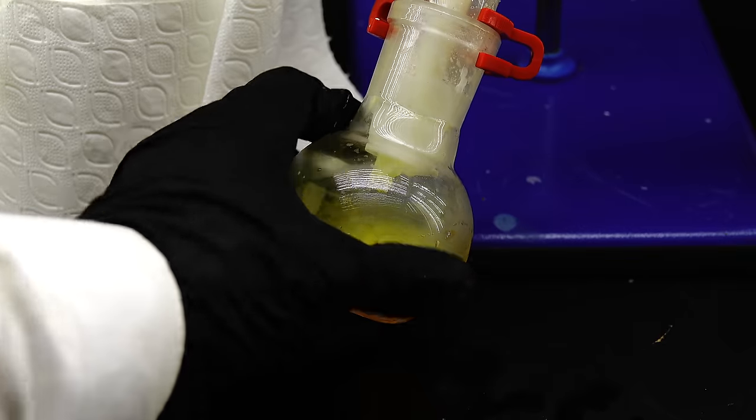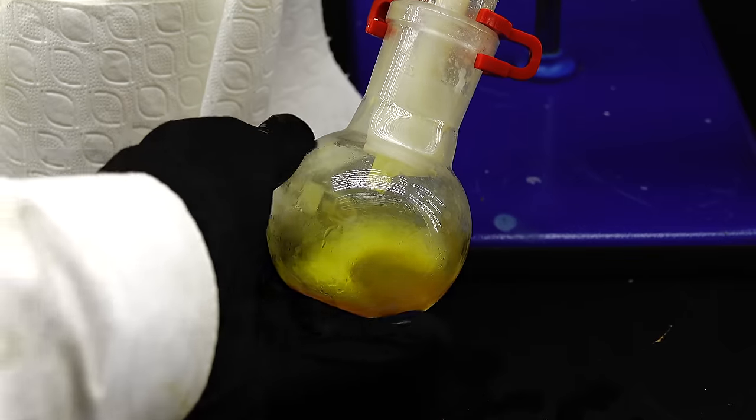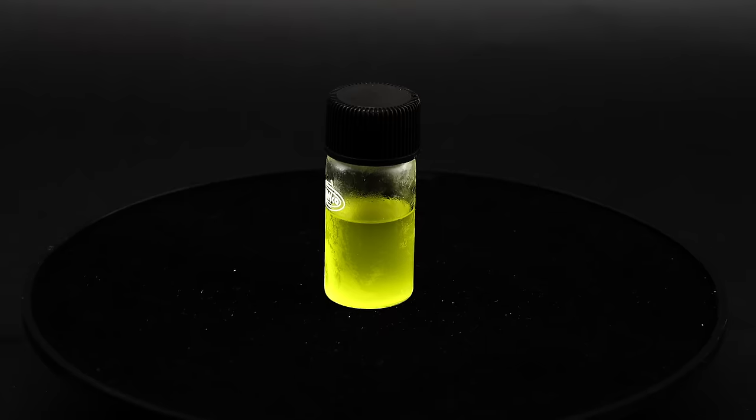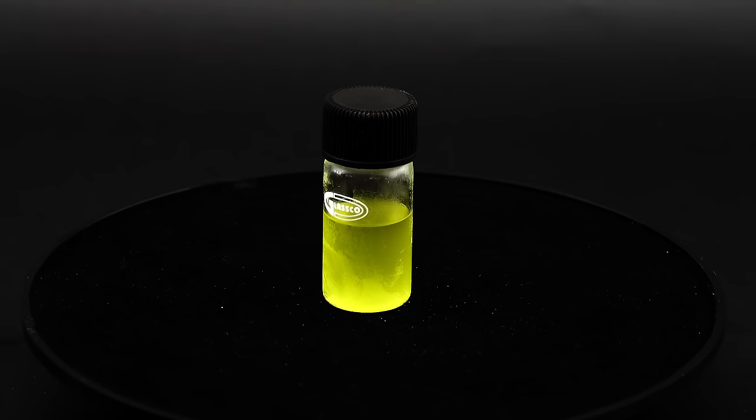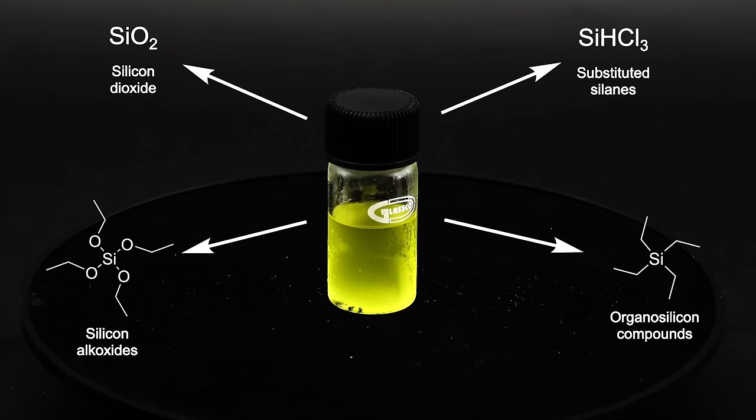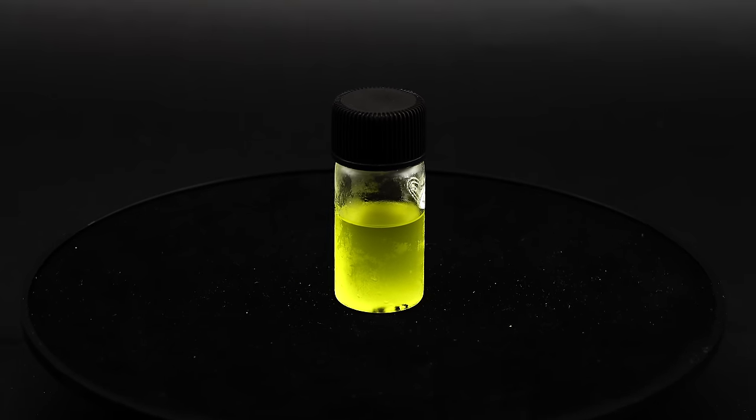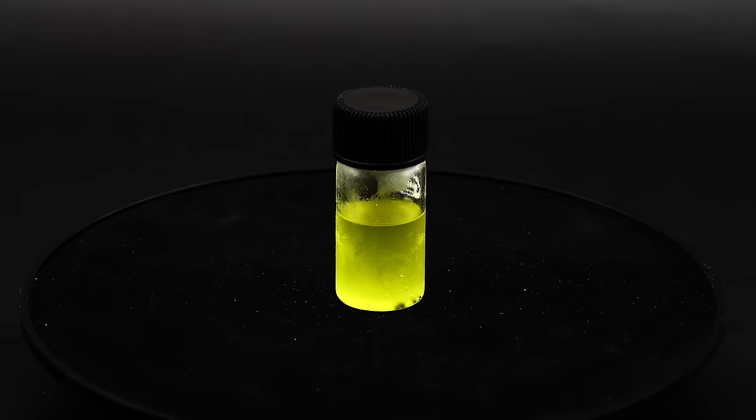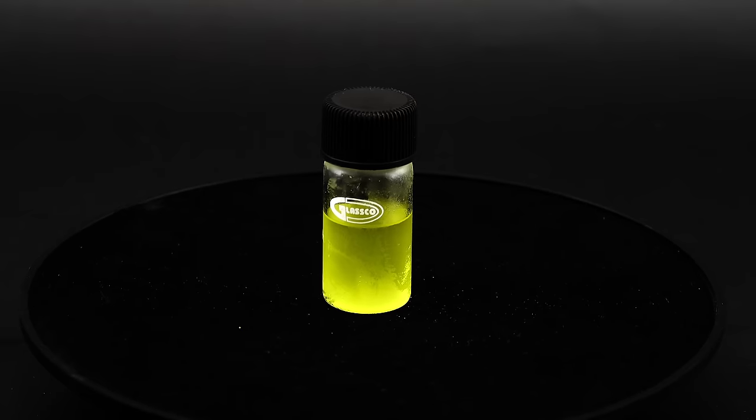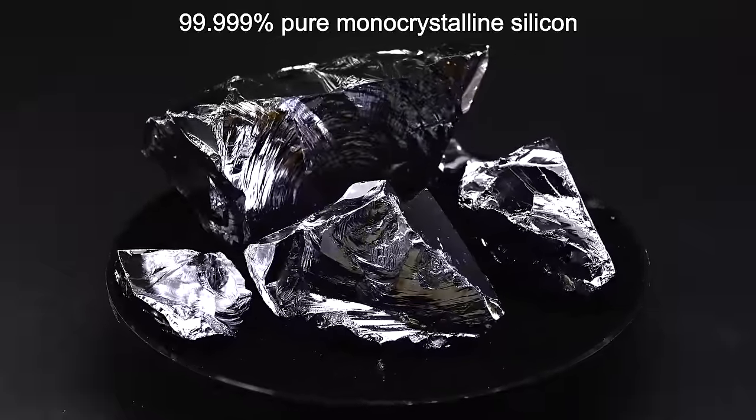You might ask yourself, what's the deal with silicon tetrachloride and why am I making it? Because at first glance, it just looks like a random silicon containing thing. Well, I like to think of silicon tetrachloride as a gateway to hundreds of other useful silicon containing compounds and it is also very technologically important because it allows for the purification of elemental silicon which can quite easily be converted into it and the resulting tetrachloride can be then distilled and turned back into silicon, greatly increasing its purity.